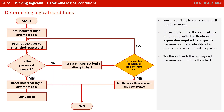Now you're unlikely to see this sort of scenario in an exam. Instead it's much more likely you'll be required to write the Boolean expression required for a specific decision point, and identify which program statement it could be part of. Try this out with the highlighted decision point in this flowchart, following the process of a user logging on to a computer system. Pause the video and see if you can work it out.